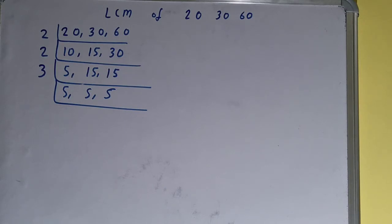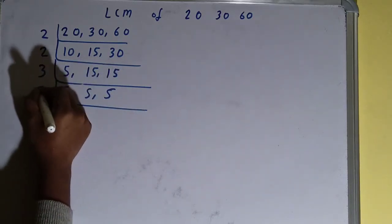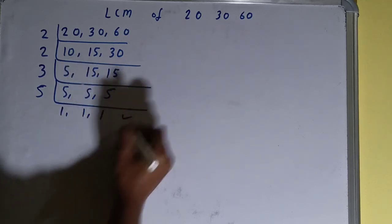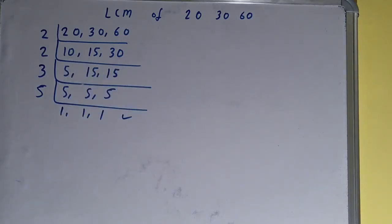Now if we check, then none of the numbers is divisible by 3 as well, so we'll go to the next prime number, that is 5. And with 5, all three numbers are divisible, so we'll divide and we'll be having 1, 1, 1. Once we have that, we need to stop.